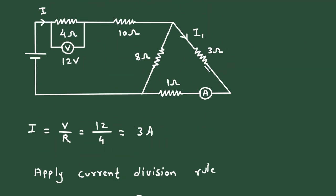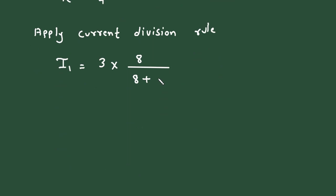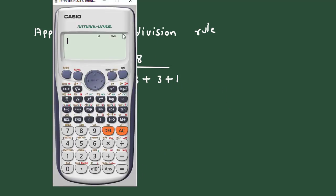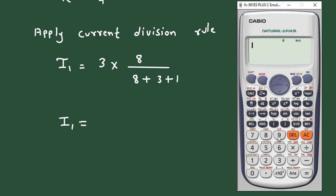Now this same branch resistance that is 3 plus 1, so it will be 3 plus 1. So therefore the value of current I1 is 3 multiplied by 8 divided by 8 plus 3 plus 1, so it is 2 ampere.